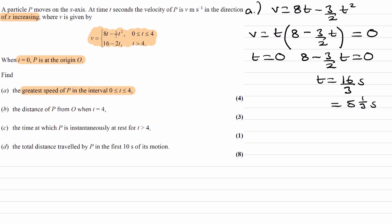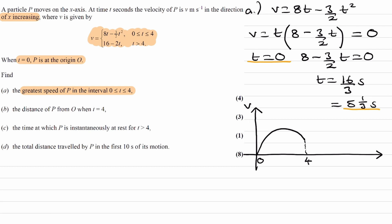Let's sketch the graph of velocity against time. We have one root when t equals 0 and one root when t equals 16/3, but we're only sketching between 0 and 4 seconds. The graph goes up from the origin and this value here is 4 seconds. If you were to continue, the next zero would be at 5 and a third seconds, but we're only considering between 0 and 4.